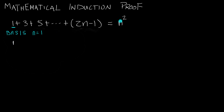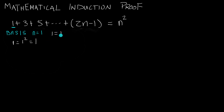For the right hand side, we have n squared. Since n equals 1, that would be 1 squared. So on the right hand side we have 1 squared, and 1 squared is equal to 1. So we simply have 1 equals 1. For our basis case, 1 equals 1, which is a true statement.